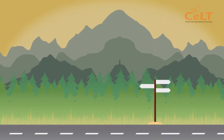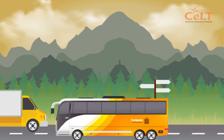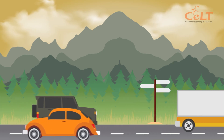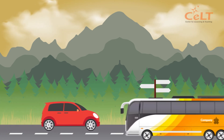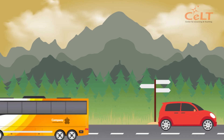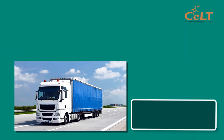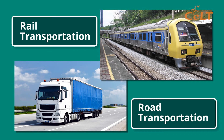Land transportation can be defined as the movement of people from one point to another via land. This type of transportation is frequently used by tourists because of the lower costs; however, the main factors affecting this choice are time and distance. Land transportation can be separated into two categories: road transportation and rail transportation. The most common and frequently used land transportation is road transportation.